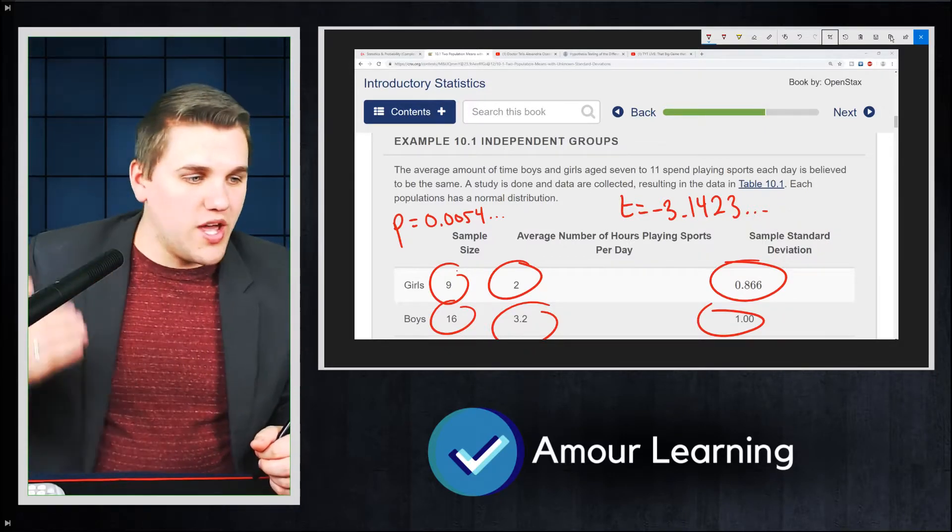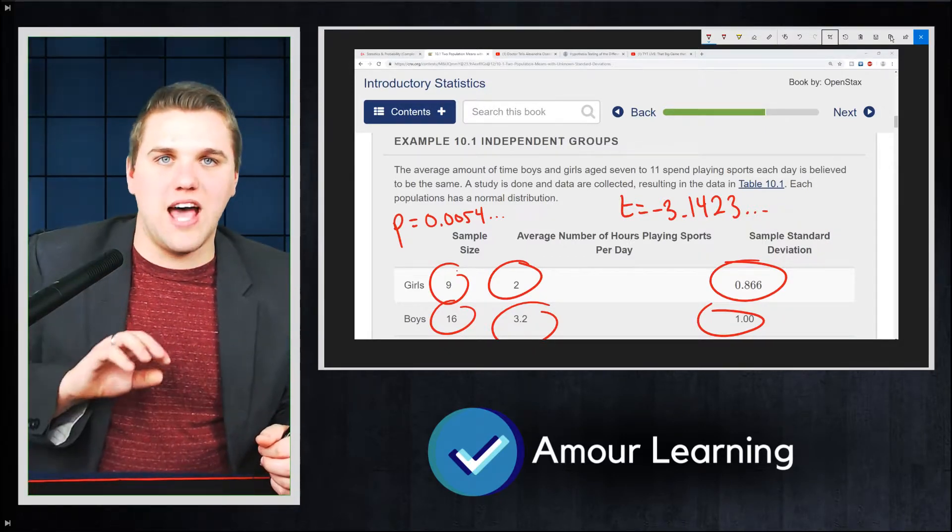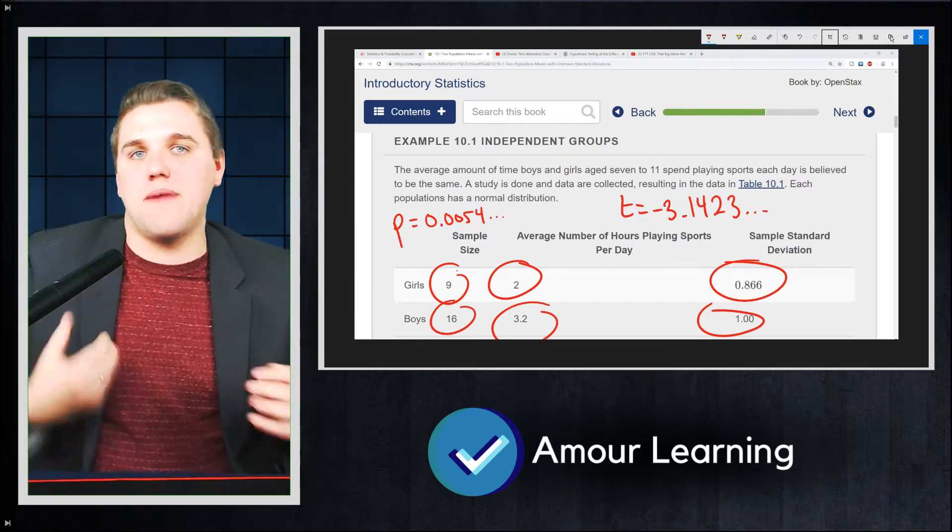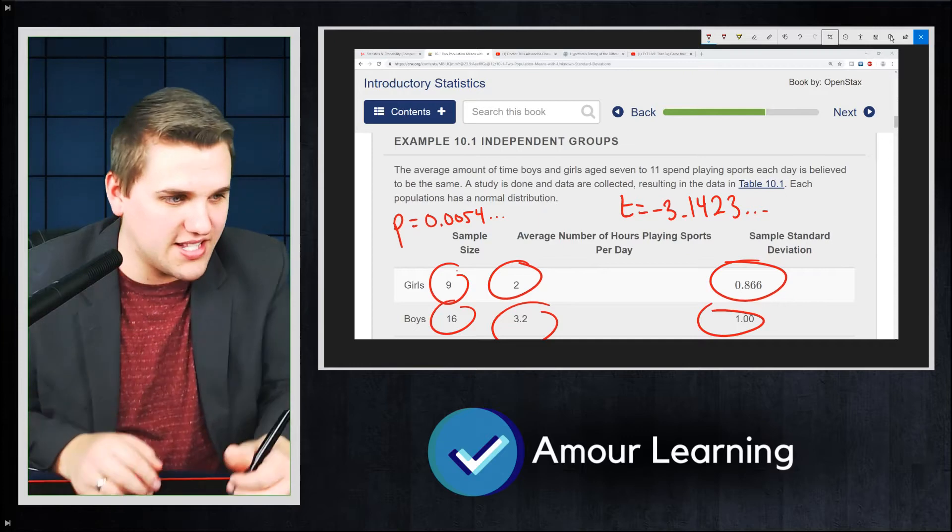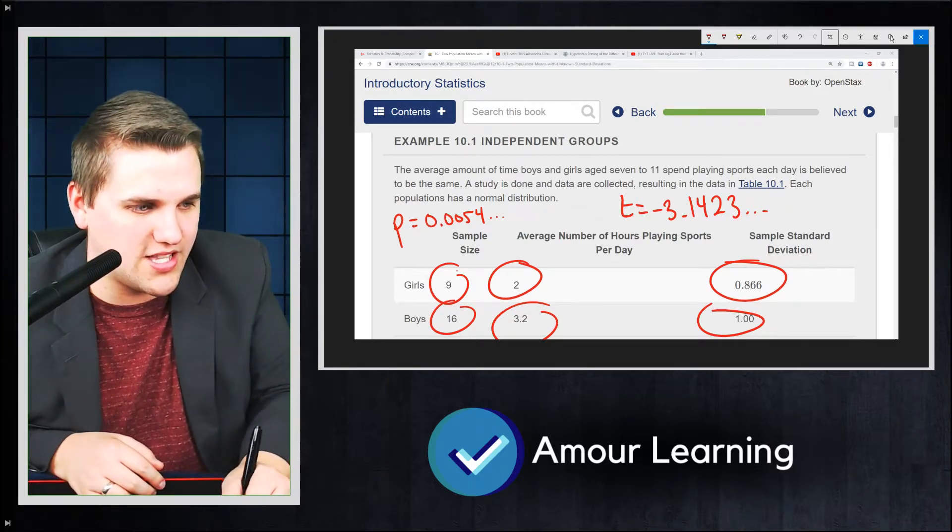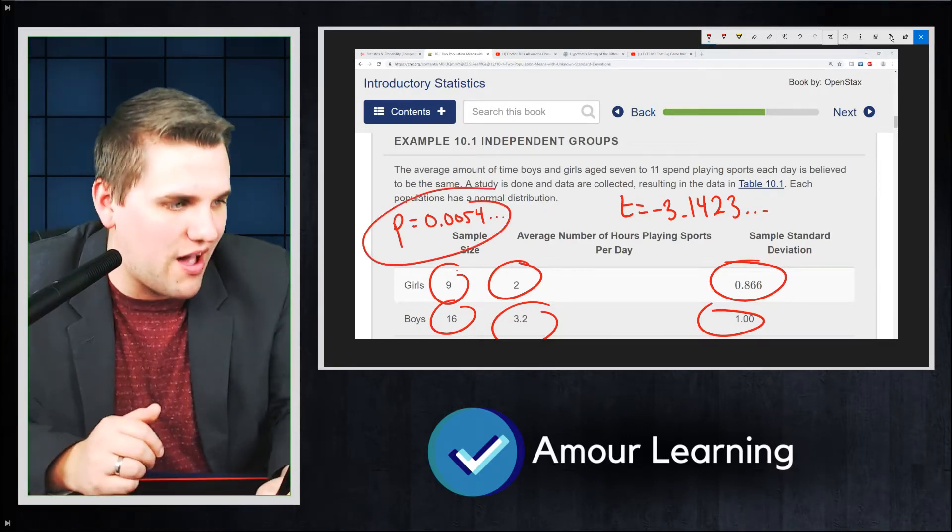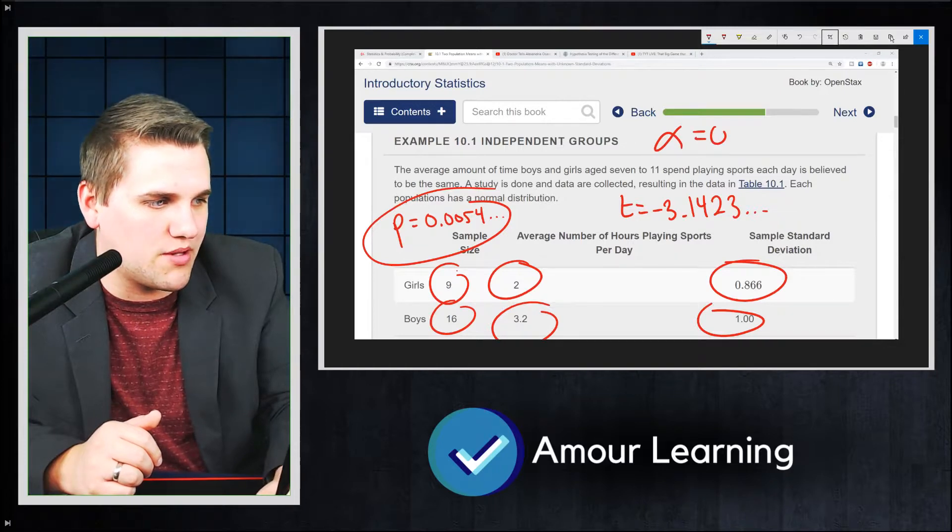And so should we claim that gender makes a difference on this? And the answer is yes, because my p-value is less than most alpha values that we would expect. Alpha is typically 0.05.